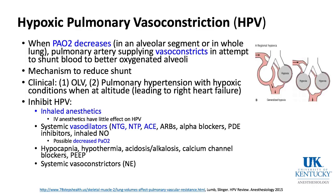Systemic vasodilators like nitroglycerin and nitroprusside can vasodilate pulmonary vessels in non-ventilated units, dropping PaO2. For example, PaO2 may fall from 200 to 150 after starting nitroprusside — a sign of HPV inhibition. Systemic vasoconstrictors like norepinephrine can also alter HPV. TIVA-based anesthetics — remifentanil, propofol — have little effect on HPV, making them preferable during one-lung ventilation when oxygenation is a concern.